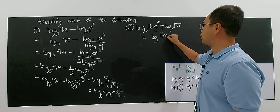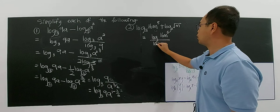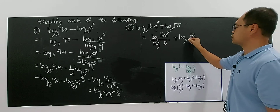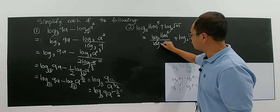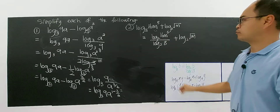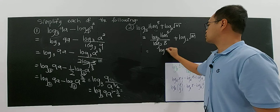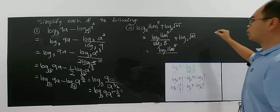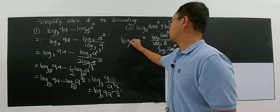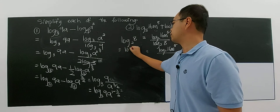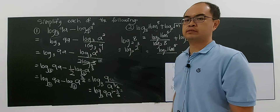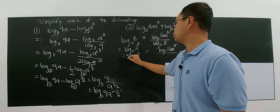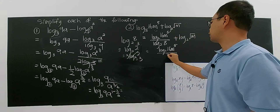Means log 16M⁵ divided by log 8, plus log √M base 2. This one is already base 2, so I choose base 2 as the most suitable. So now you have log 16M⁵ base 2, and log 8 base 2 simplifies: 8 is 2³, so you can bring the 3 in front — 3 times log 2 base 2, which gives 3 times 1 equals 3. So now you have 3 in the denominator.